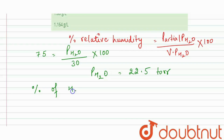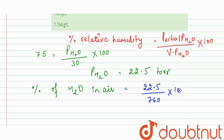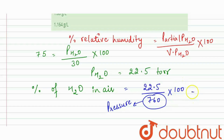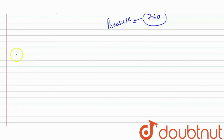Now we can calculate the percentage of water present in the air, since we need to find the density of wet air. That will be equal to (partial pressure / 760) × 100, which gives us 22.5/760 × 100. Here, 760 mmHg is the pressure at standard conditions. So the percentage of H₂O in air equals 2.96%.